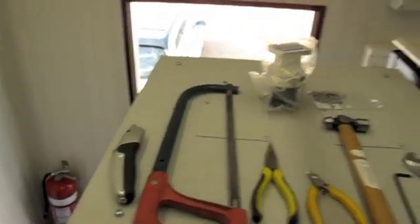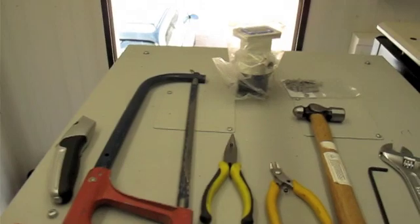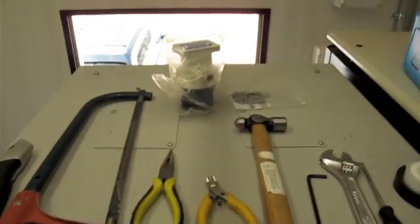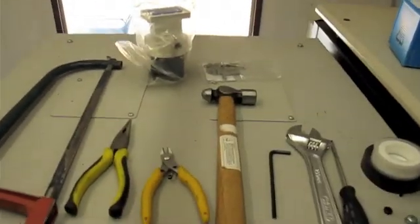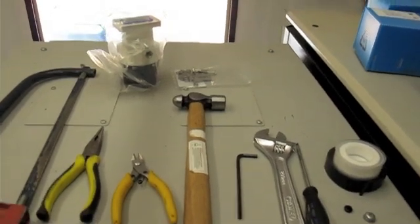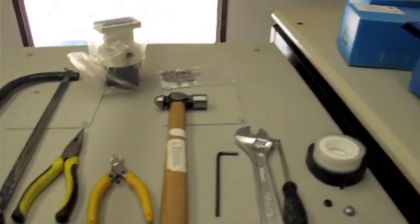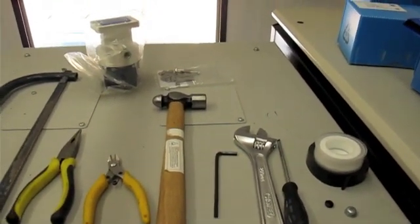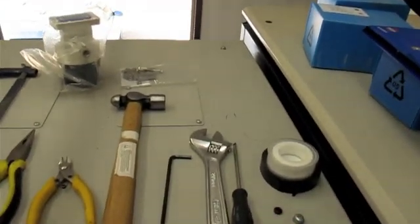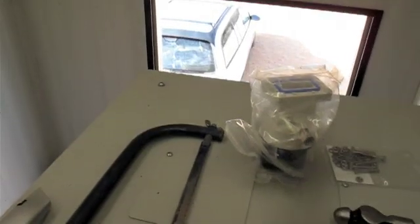The tools you're going to need, roughly in the order that you're going to need them, are a Stanley knife, hacksaw, pliers, snips, ball-peen hammer, allen key, adjustable wrench or suitably sized spanner, a small flathead screwdriver, electrical tape and some plumber's tape, and of course the flange itself.